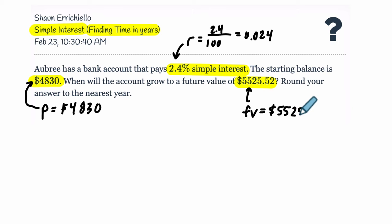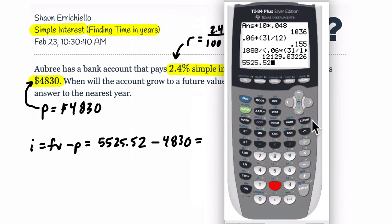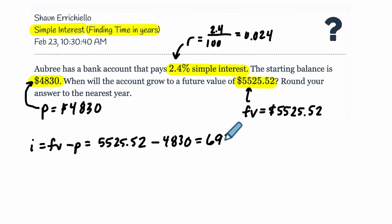First thing I want to find out is how much is the account going up by. So I want to do my future value minus my principal. So $5,525.52, that's our future value, minus the principal, $4,830. What we're really finding when we look at this is called the interest I. This is the amount of interest that we're gaining. So let's calculate that. $5,525.52 minus $4,830. So that's our interest amount, $695.52. That just means this is the amount that our account is increasing by.